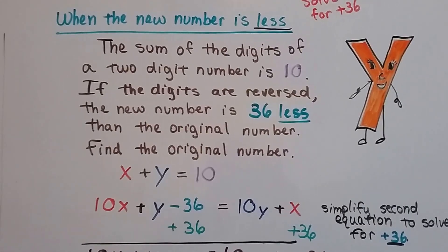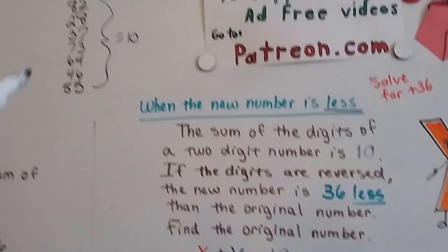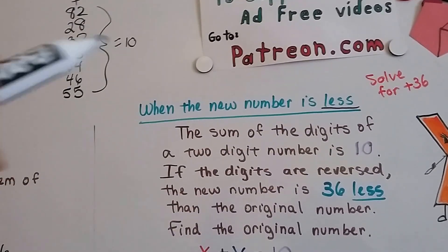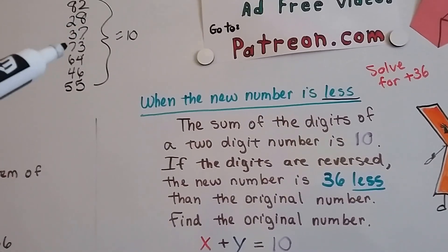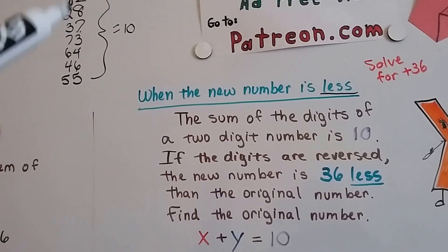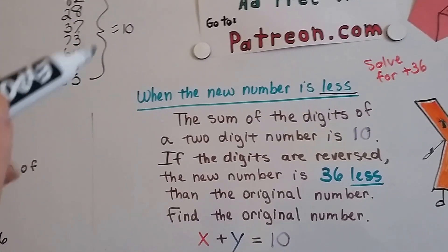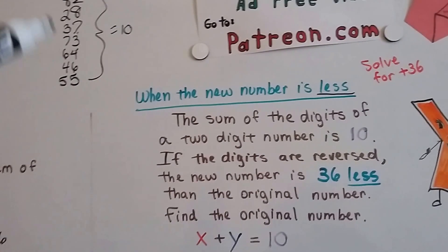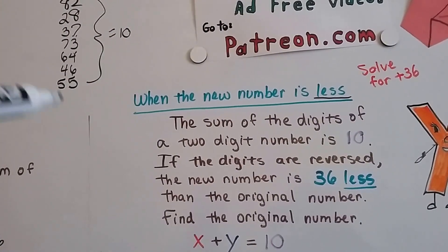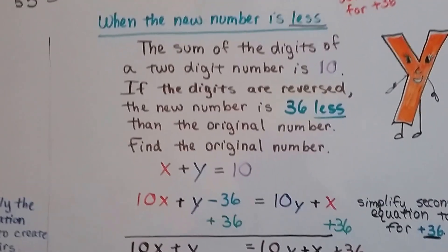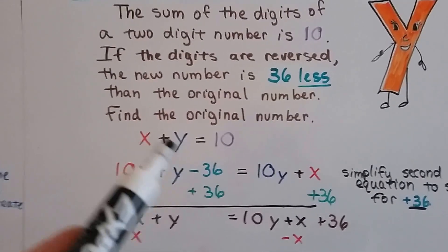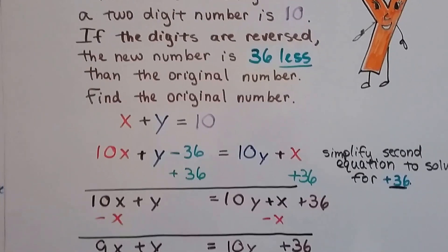So the sum of the digits of a two-digit number is 10. That means a two-digit number like 82 — when you add the 8 and the 2 together it's going to be 10 — or a 28, 3 and 7, 7 and 3, 6 and 4, 4 and 6, 5 and 5. When you add the tens digit to the ones digit, it equals 10. It could also be 19 and 91. So we know that when we add the tens and ones places together it equals 10. That's our first equation.